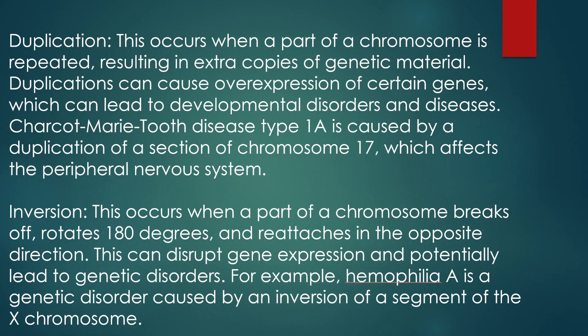Charcot-Marie-Tooth disease type 1A is caused by a duplication of a section of Chromosome 17, which affects the peripheral nervous system. The third one is Inversion. This occurs when a part of a chromosome breaks off, rotates 180 degrees, and reattaches in the opposite direction. This can disrupt gene expression and potentially lead to genetic disorders — for example, Haemophilia A, which is a genetic disorder caused by an inversion of a segment of the X chromosome.